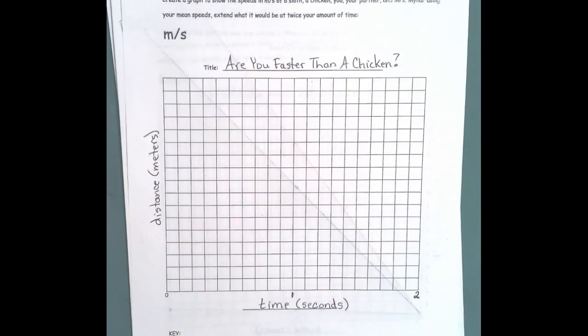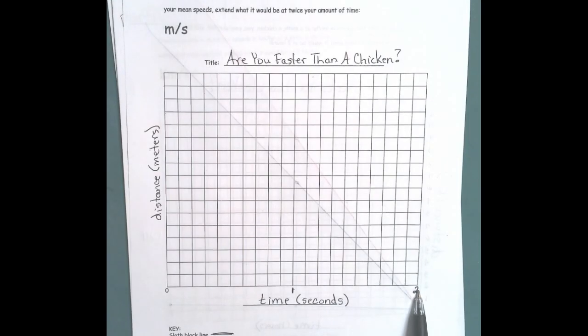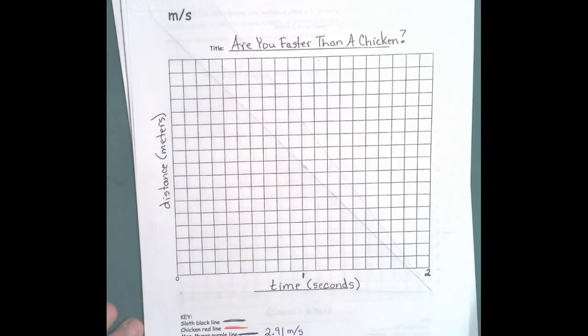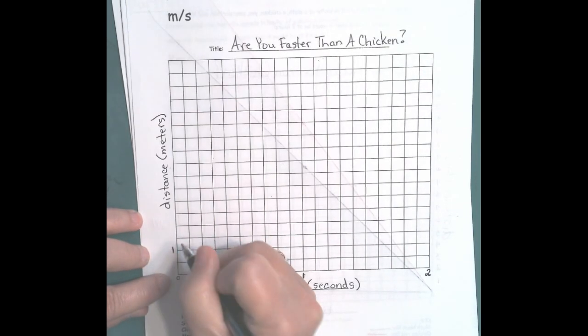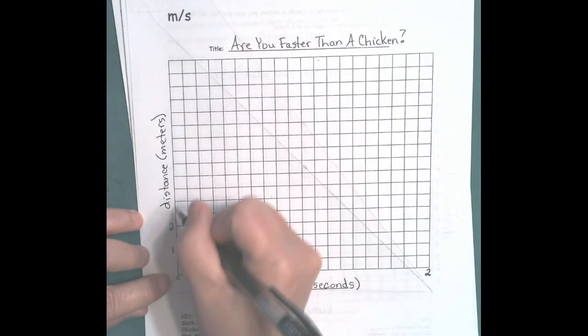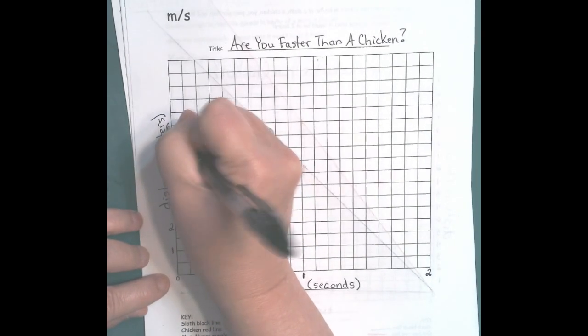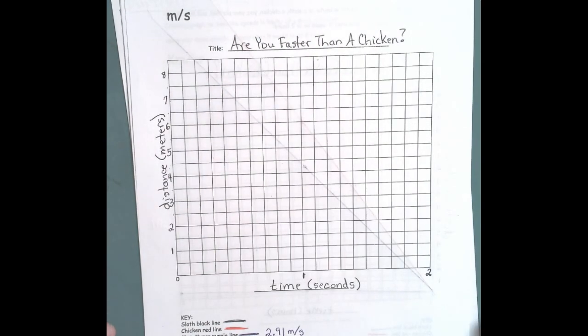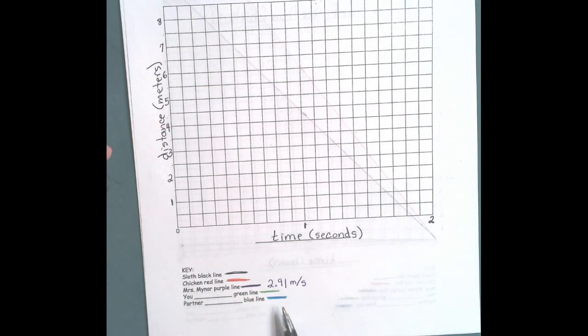On the meters per second graph, we've added the title. We've added the x-axis, which is time in seconds. We added one second and two seconds. For our y-axis, it's distance in meters. This would be half, and this would be one, half two, half three, half four, half five, half six, half seven, half eight and a half. Your key is the same - black for the sloth, red for the chicken, purple for Miss Minor, green, and then blue. You write your name and your partner's name.